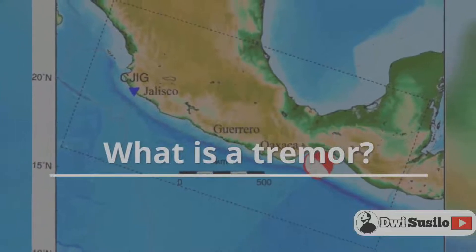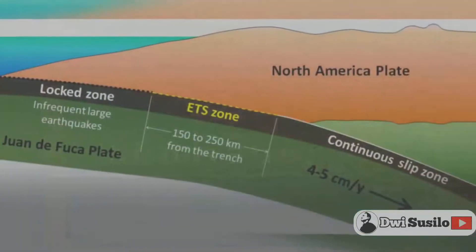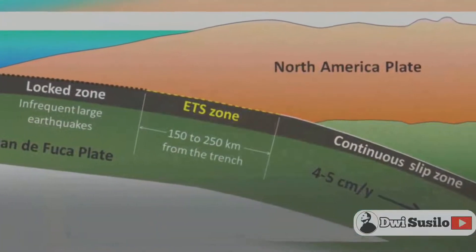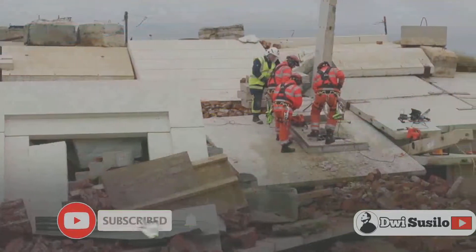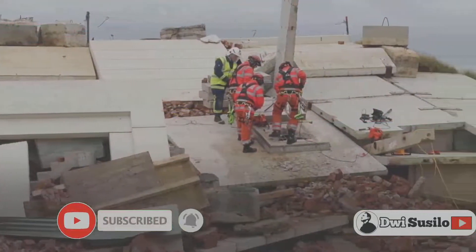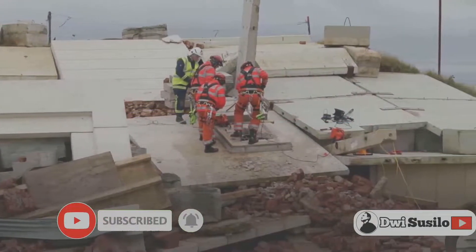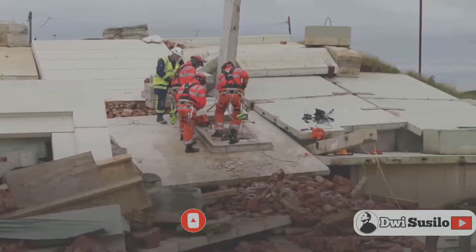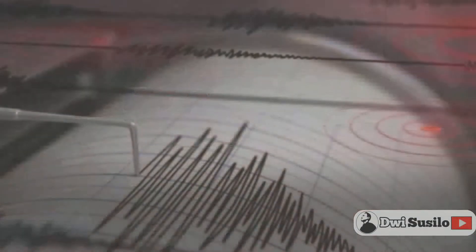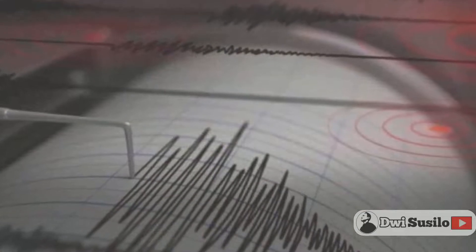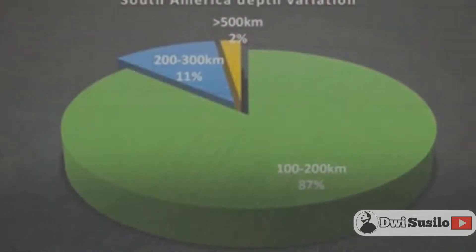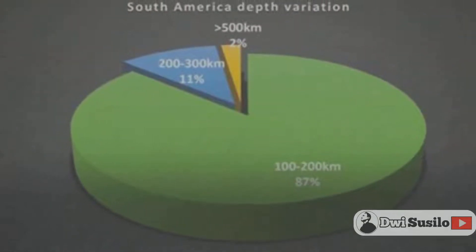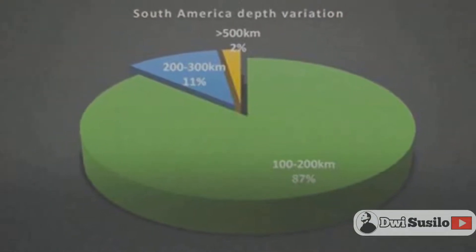What is a tremor? You may have heard the term tremor instead of an earthquake. It is the term used to describe a non-earthquake seismic rumble — anything under a certain size. They can sometimes be indicators that an earthquake is coming, and these are known as foreshocks. However, they are not reliable indicators that something bigger is on its way.